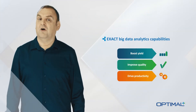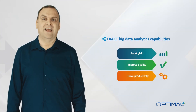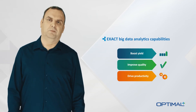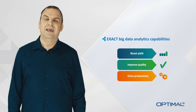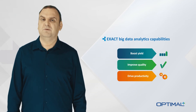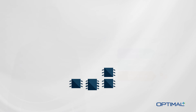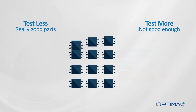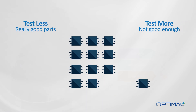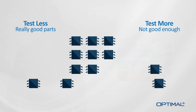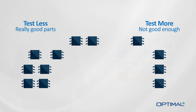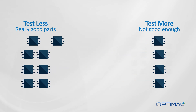By looking for correlations across any combination of tests and across multiple test operations, Xact enables engineers to separate devices into different test populations — devices that require less testing because they are so good, and devices that need more testing because they might not be good enough.